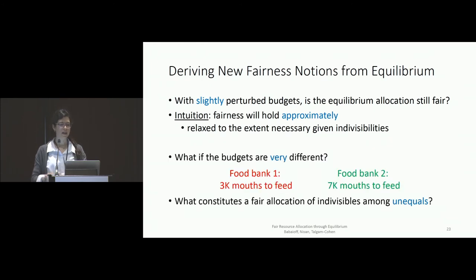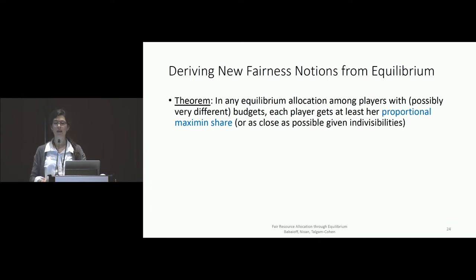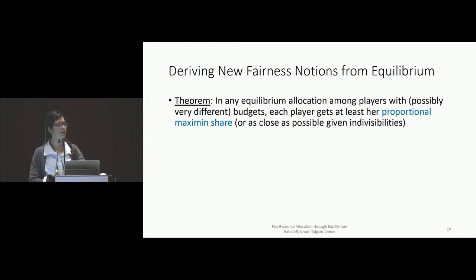Why not also look at budgets that are really different from one another? Food banks could be catering to populations of very different sizes. The question is: what constitutes a fair allocation of indivisibles among unequals? This is an interesting and understudied question. Once you look at the concept of equilibrium from economics, you can actually pinpoint the right fairness notion for allocation. We get theorems of this kind: in any equilibrium allocation among players with possibly very different budgets, each player gets what we call proportional maximin share — a generalization of maximin share.